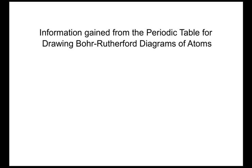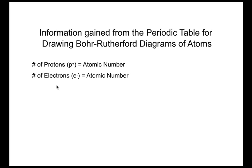The information that we can get from the periodic table is essential if we're going to draw Bohr-Rutherford diagrams. We can gain the number of protons, we can figure out the number of electrons, and we can calculate the number of neutrons.